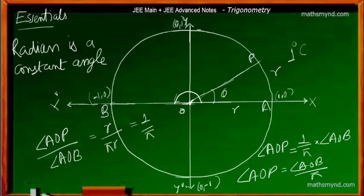Because in this particular case, angle AOB and pi are constants, which simply means that the radian measure is actually dealing with a constant angle.